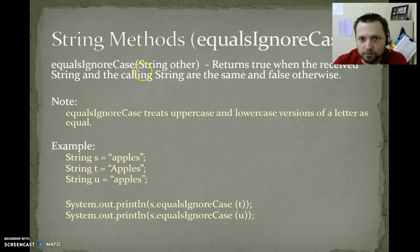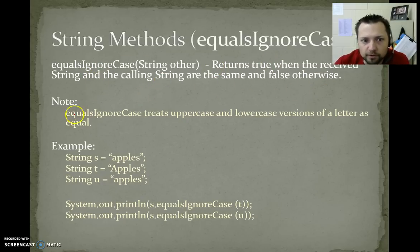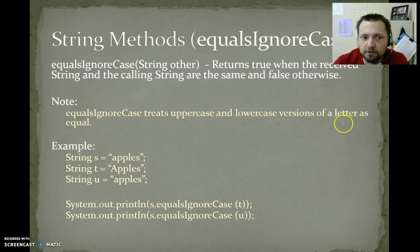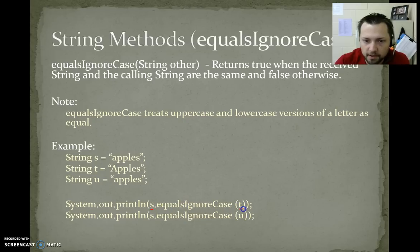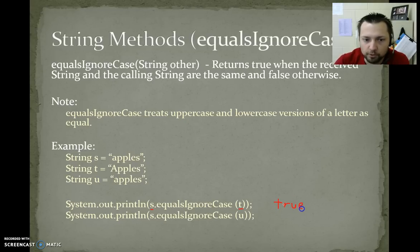equalsIgnoreCase — you send it another string. Returns true if the received string and the calling string are the same and false otherwise. Note: equalsIgnoreCase treats uppercase and lowercase versions of a letter as equal. So if we do s.equalsIgnoreCase(t), we compare "apples" to "Apples" but ignore differences in case — so these are the same. And comparing lowercase apples to lowercase apples, we get true. So we get true, true in this example.